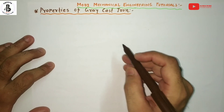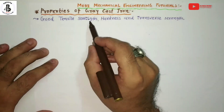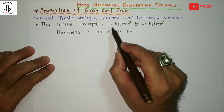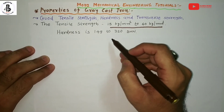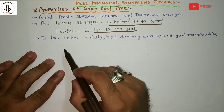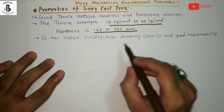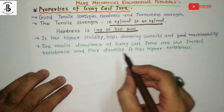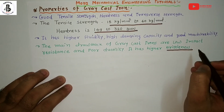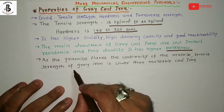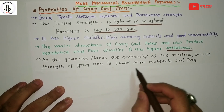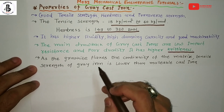Properties of gray cast iron include good tensile strength, hardness, and transverse strength. Tensile strength ranges from 15 to 40 kg/mm², and hardness is around 149 to 320 BHN (Brinell Hardness Number). It also has higher fluidity, high damping capacity, and good machinability. The main drawbacks are low impact resistance and poor ductility, making it brittle. Its tensile strength is lower than malleable cast iron.